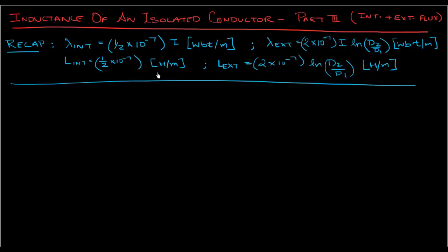In part 2, we derived flux linkages due to external flux as 2 times 10 to the power minus 7 times i times ln of d2 over d1, where d2 and d1 were the distances between which we were measuring our flux lines.